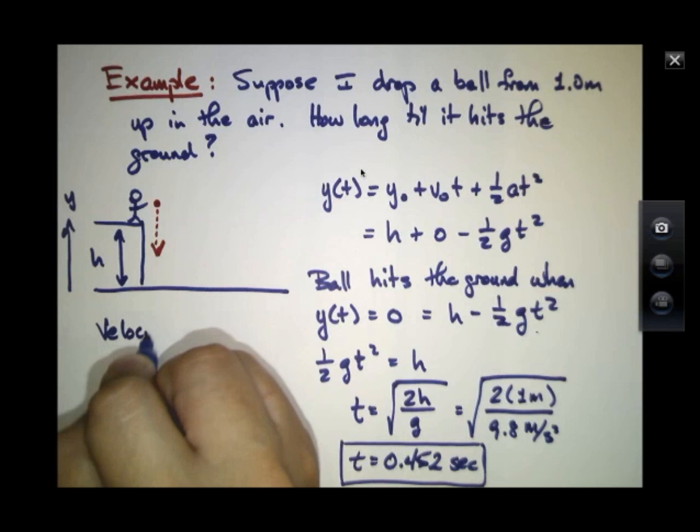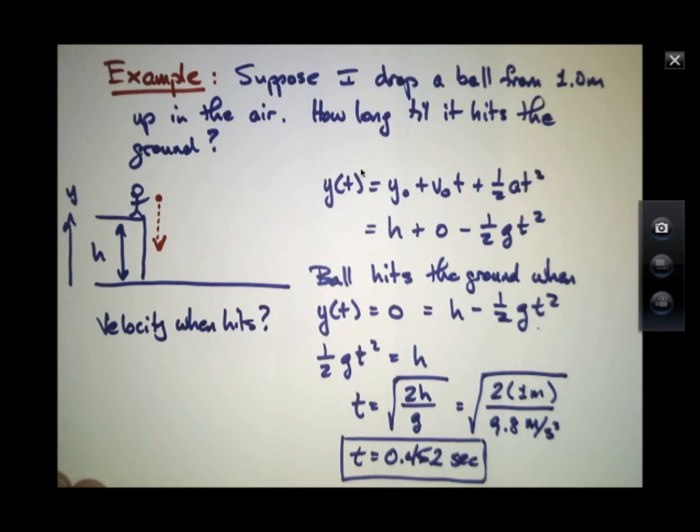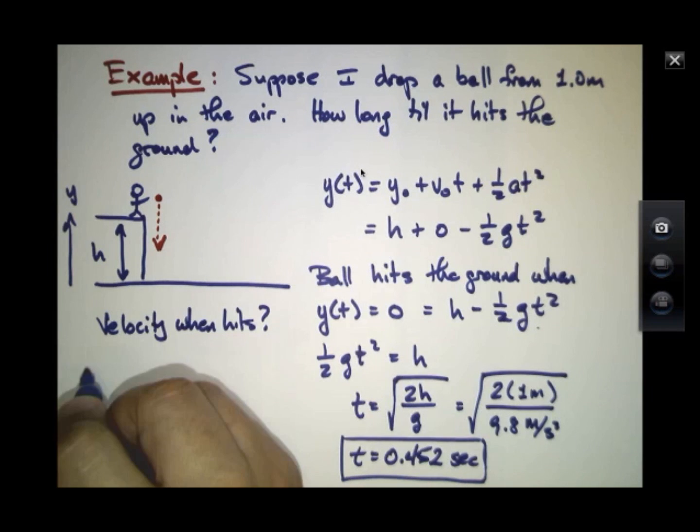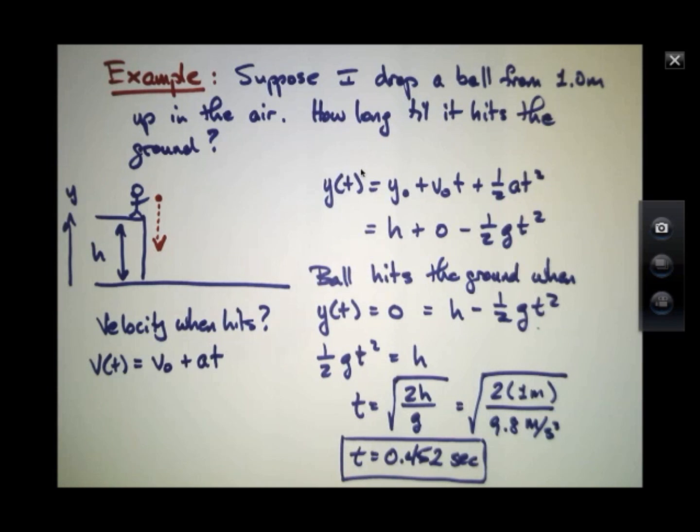I could also ask how fast it will be going, because it's not going to just gently glide to the ground. It's going to be moving pretty fast at the time it hits the ground. So this expression V equals V-naught plus A times T is what the velocity as a function of time is. Again, this V-naught is zero. And so this will equal minus G times the time, and we're going to insert that particular time right there because we want to know the particular time when it's just about to hit the ground. So I'm going to insert 0.452 seconds here and use 9.8 meters per second squared. And one finds that this is minus 4.4 meters per second.